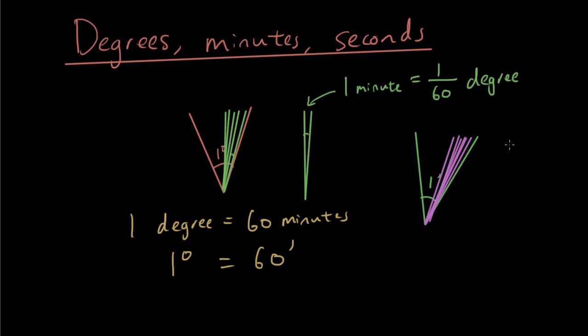Then what happens is this little angle inside, this little angle inside is 1 second. So what that means is 1 minute is 60 seconds. Now the symbol for seconds is 2 dashes. So that is basically the conversion.